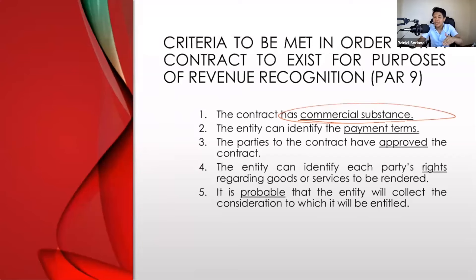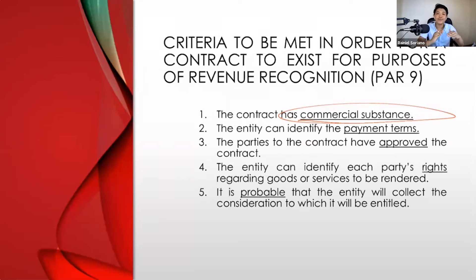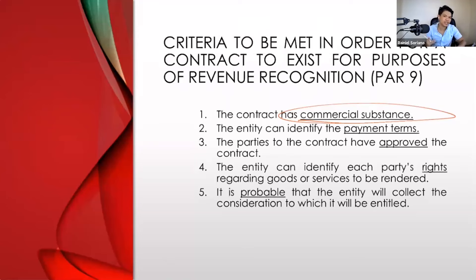If there is no commercial substance in a transaction, there is no contract. And without a contract, revenue cannot be recognized. Number two: the entity can identify the payment terms — meaning we can determine how much the transaction price will be and how it will be paid, including any discounts, installment terms, and so on.